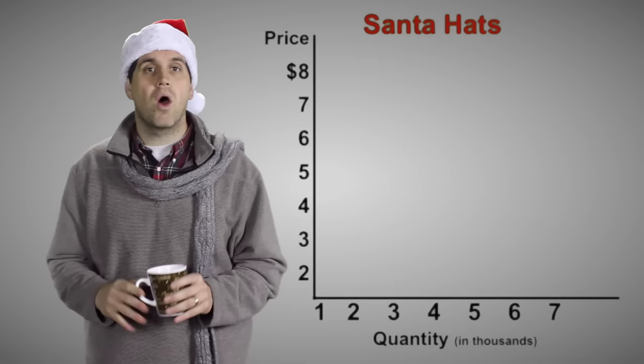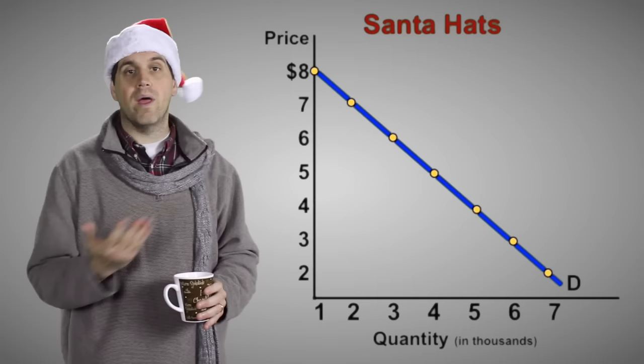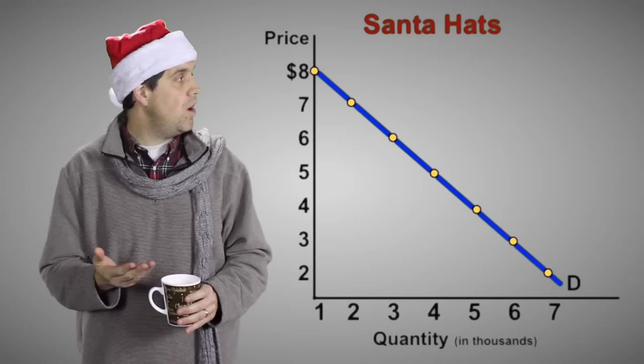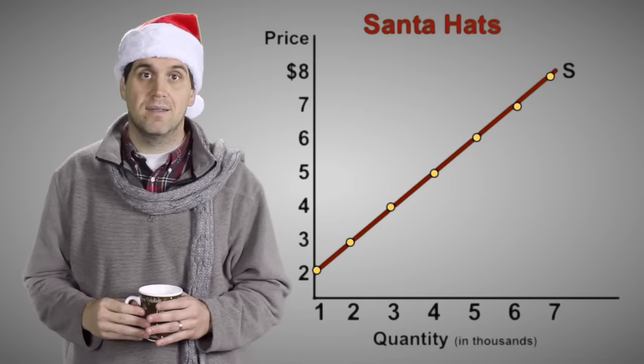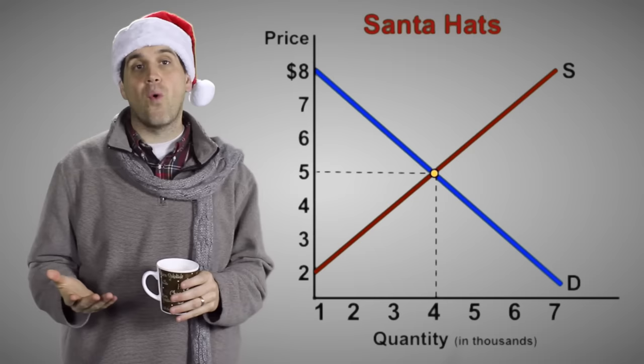Let's look at the market for Santa hats. The demand basically shows the number of people who are willing to buy hats at different prices. If the price is high, then fewer people want to buy hats. If the price is low, then more people want to buy them. Supply and demand come together and set the equilibrium price and quantity — let's say $5 and 4,000 hats.